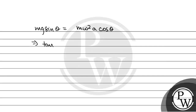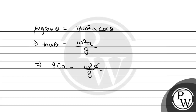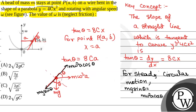From here, tan θ = Ω²A / g. We have already found that tan θ = 8CA, so putting the value: 8CA = Ω²A / g. A and A cancel, so Ω² = 8Cg, or Omega = 2√(2Cg). So the correct option will be option A. Best of luck.